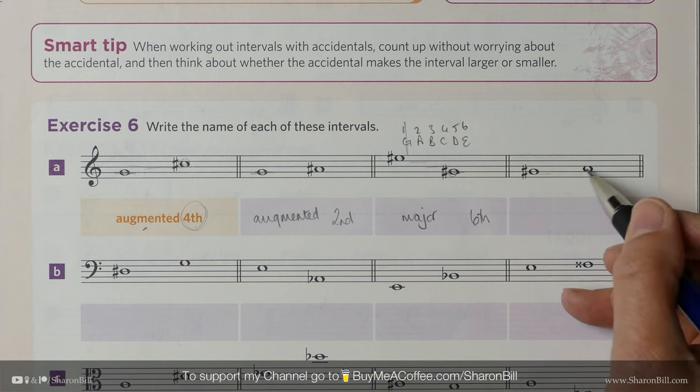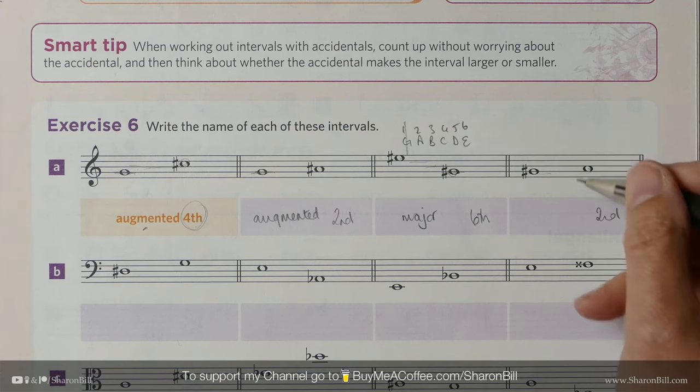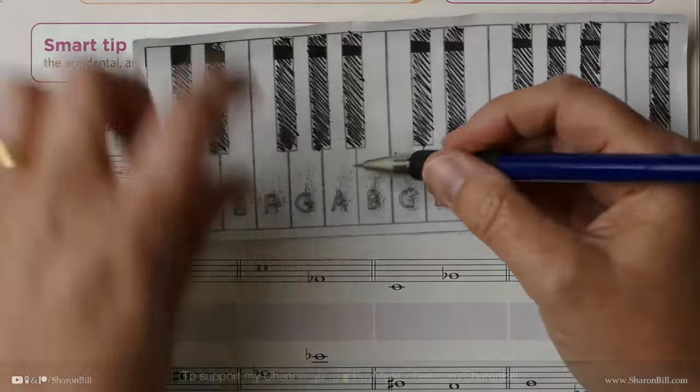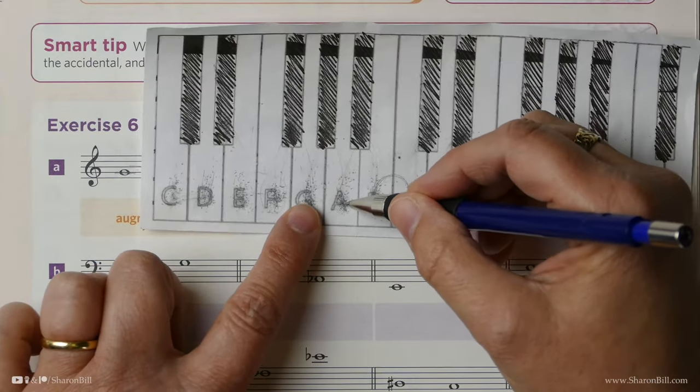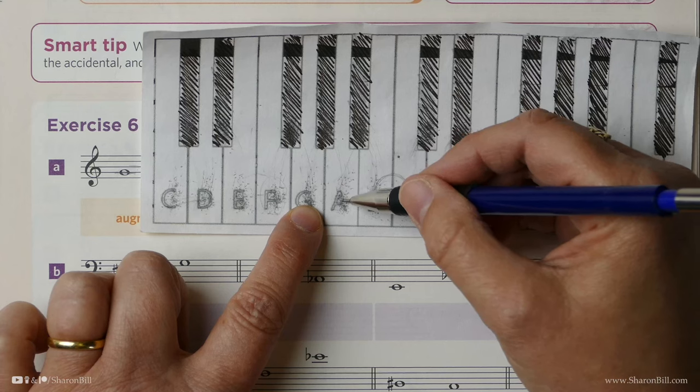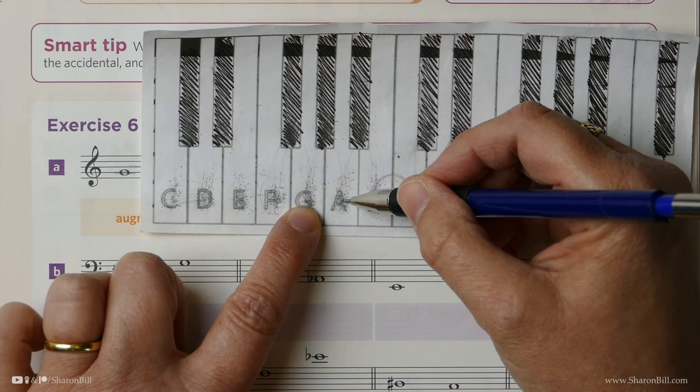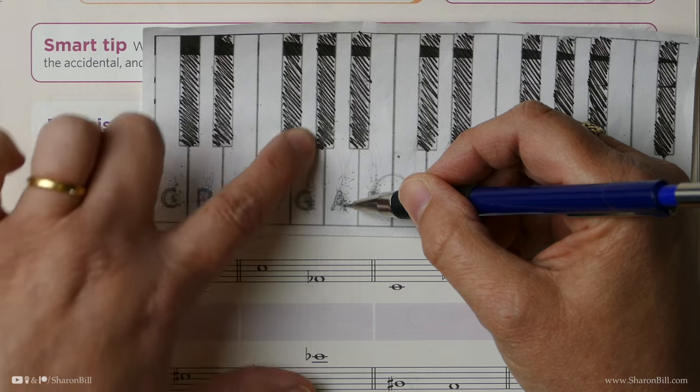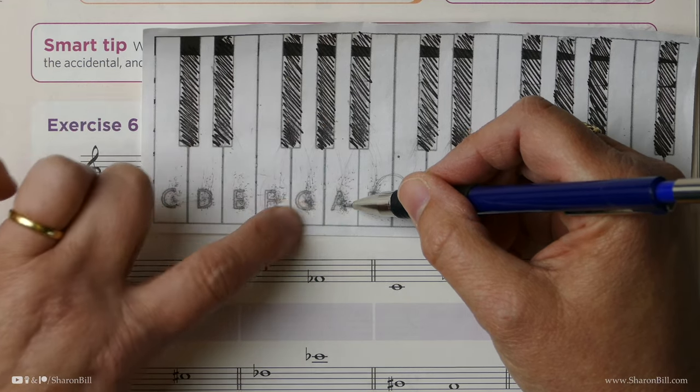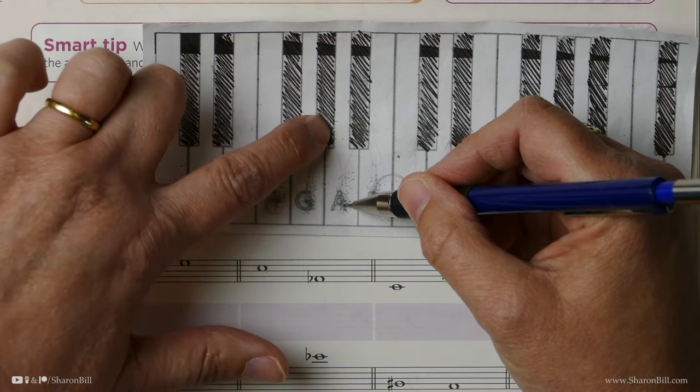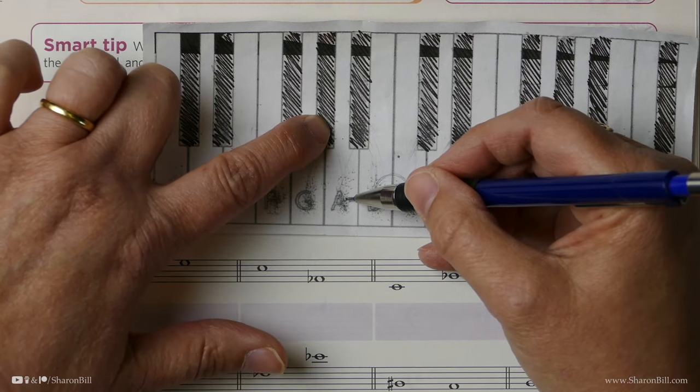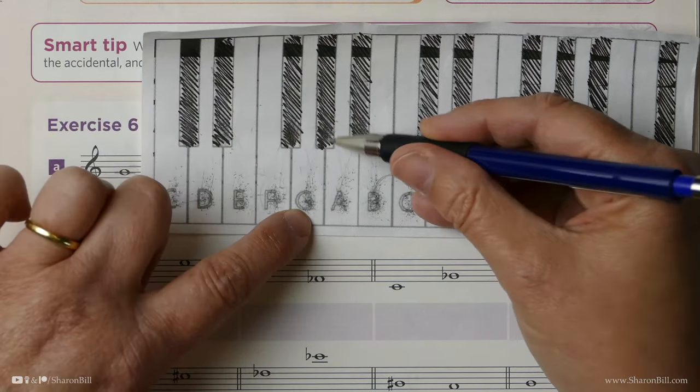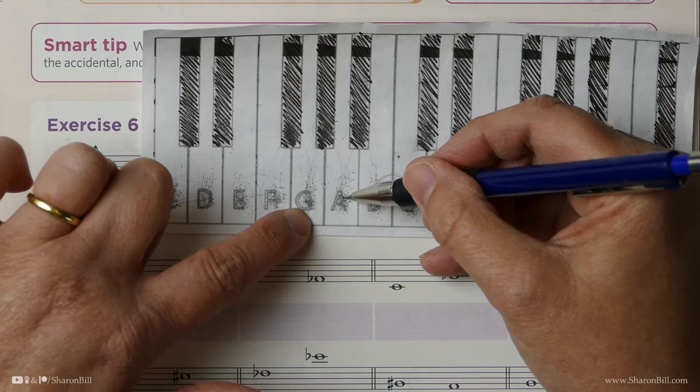Now here, G anything to A anything is a second. Now we know that G to A, a full tone is a major second. However, if we've raised the lower note up, we've made the interval smaller to a semitone, that's a minor second, isn't it? And G sharp to A is part of that.